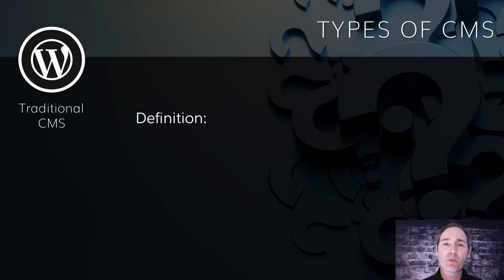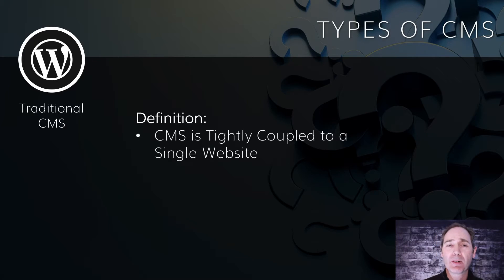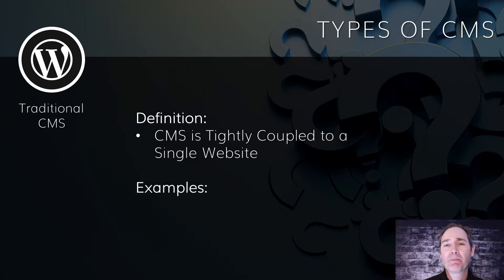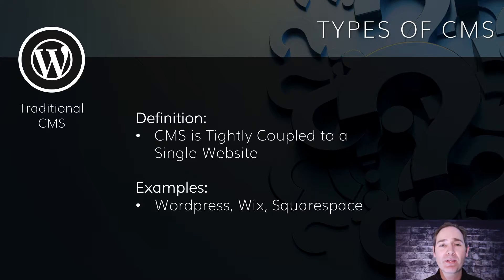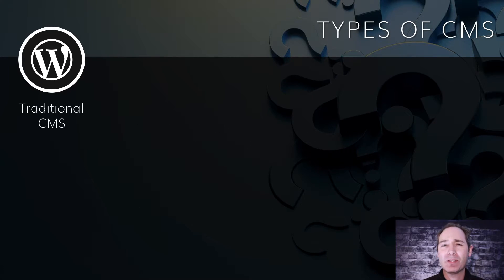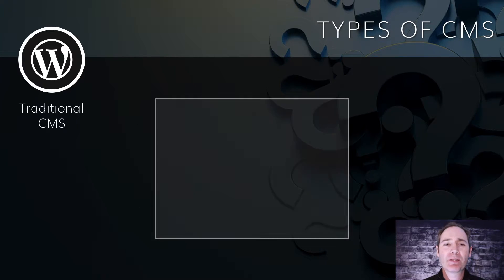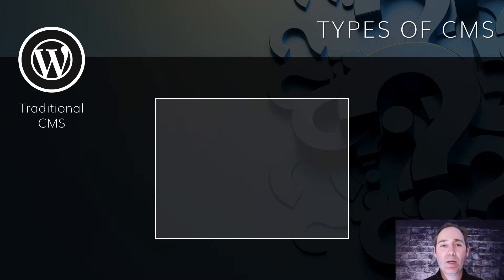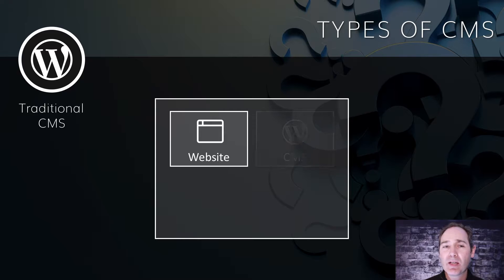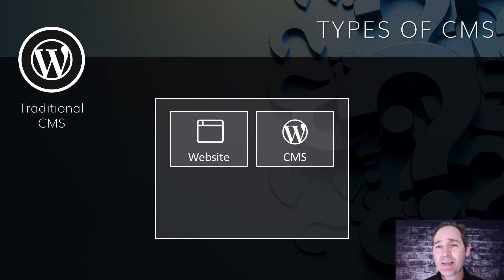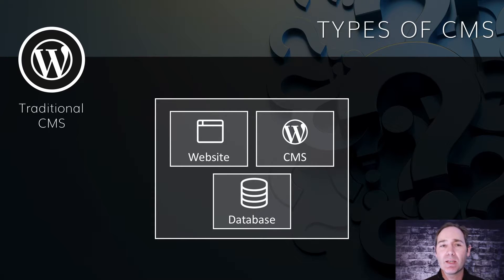Traditional CMS is what initially dominated the website market, and that's any CMS that's tightly coupled to a single website. Examples include WordPress, and there's also Wix and Squarespace that fit into this category as well. I call it CMS in a box — traditional CMS puts everything in the same box. Your website is tightly coupled to the CMS itself and all the other things that CMS brings with it, like databases or other technology-specific things.